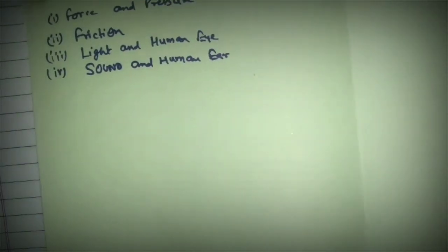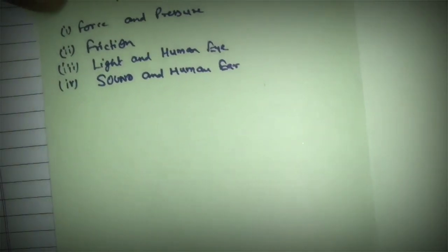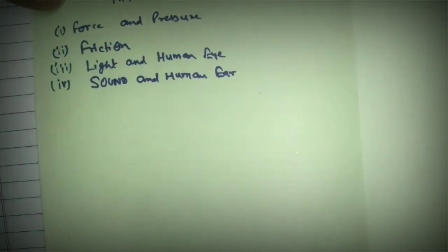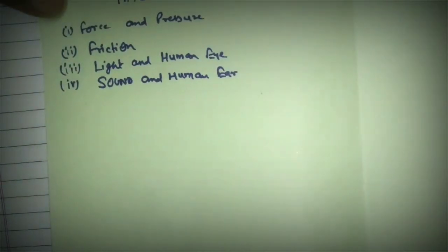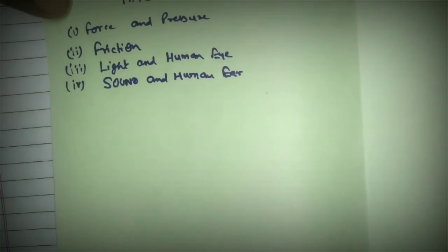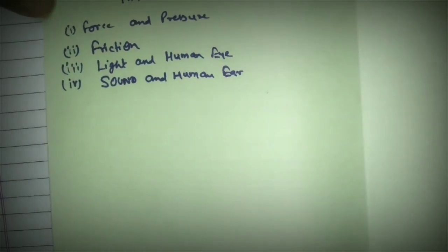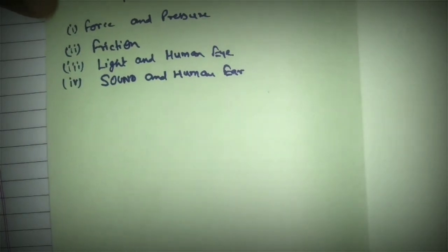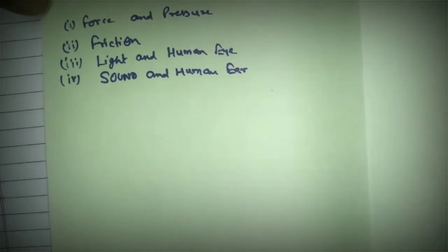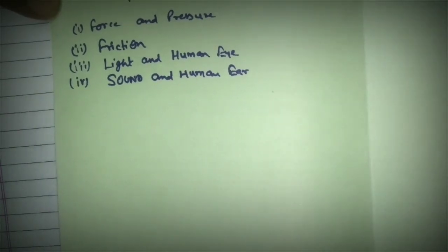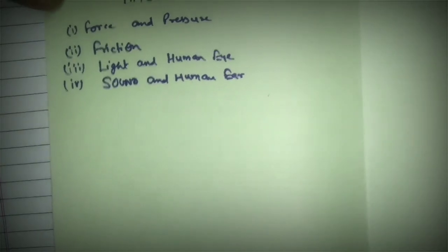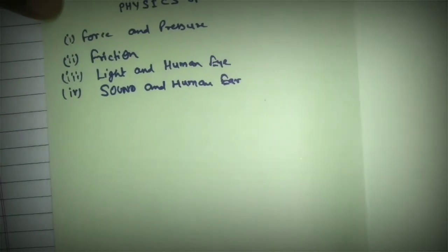In the second part of this chapter we discuss about the human ear — the structure and function of the human ear — and we also discuss some basic properties related to sound waves like reflection of sound and echo of sound.